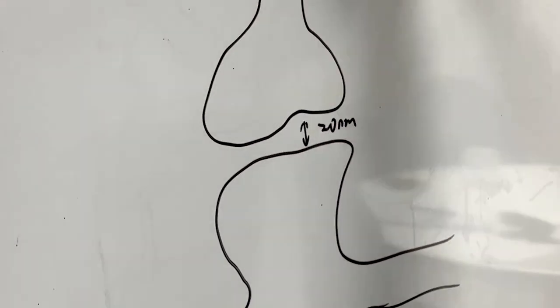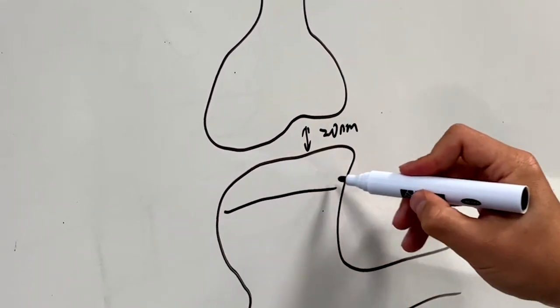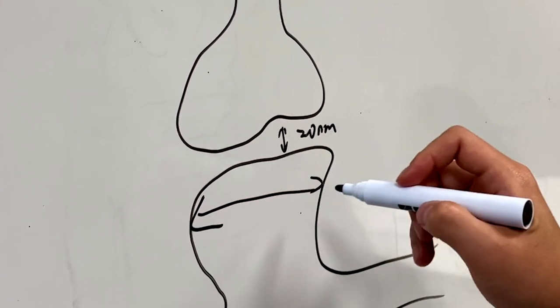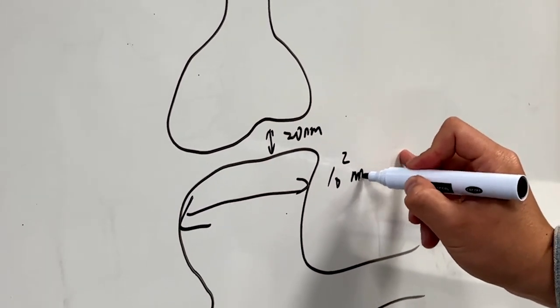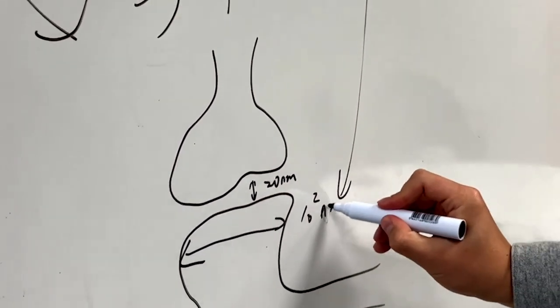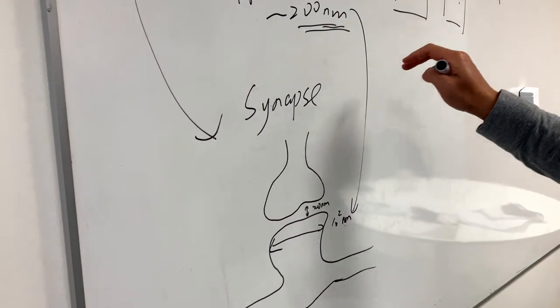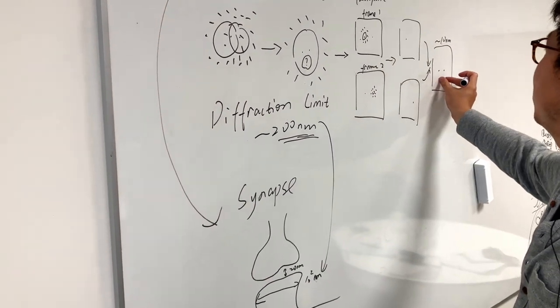The synaptic cleft is only about 20 nanometers, way below the diffraction limit. And the diameter of the synapse can be only a few hundred nanometers, very close to the diffraction limit. That's the reason why we need a technique that allows us to super-resolve two molecules away from each other.